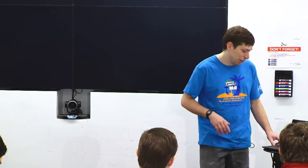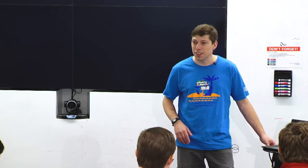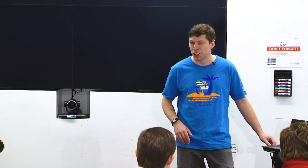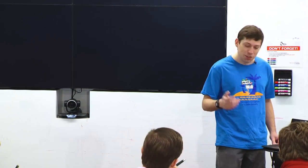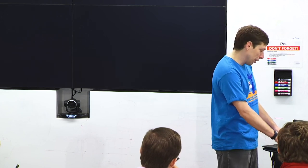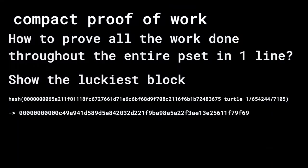It's kind of a weird trick question. Andrew Miller, who is now a professor at Cornell, wrote about this initially in the Bitcoin forums. What you do is you just show the luckiest block. In this case, it was mined by turtle. The previous block reference was 0065A2, turtle 1, 654244. And the hash of that block is 00C49A41...